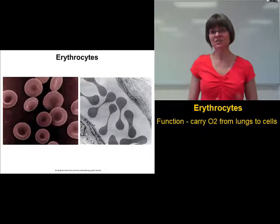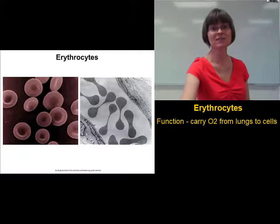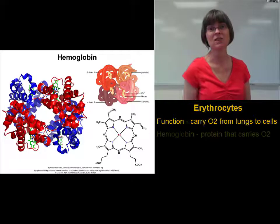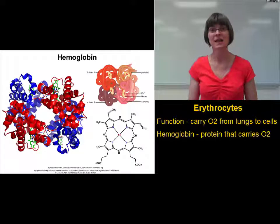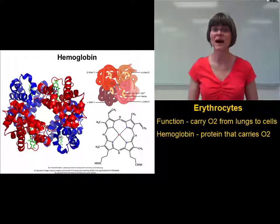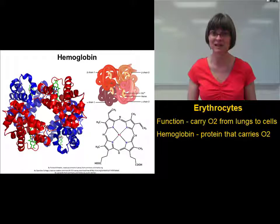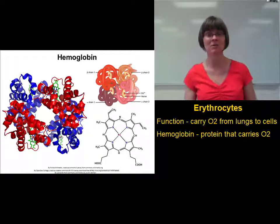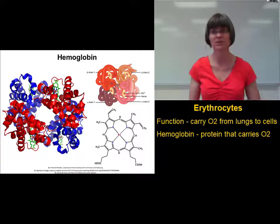Since erythrocytes lack most of their organelles, that makes a lot of space for hemoglobin. Hemoglobin is important because it's what binds to the oxygen. Without hemoglobin in your red blood cells, it doesn't matter how many red blood cells you have — they can't carry oxygen if there's no hemoglobin in them.